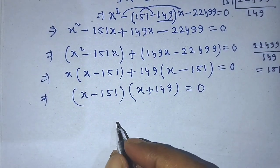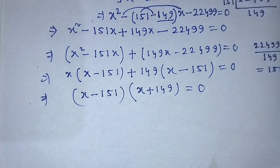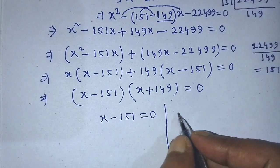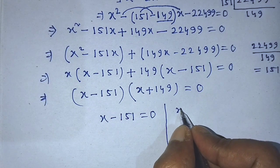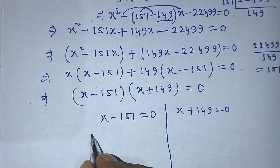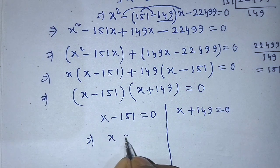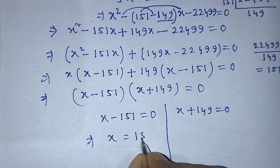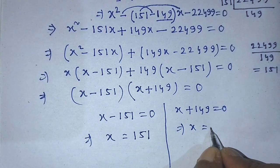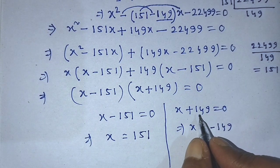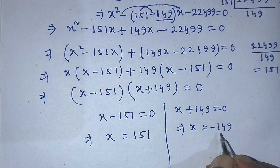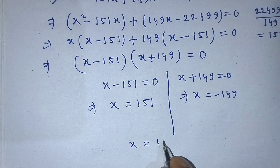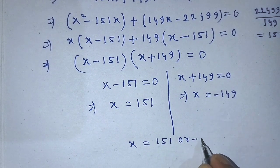Applying the zero product rule, we get two equations: x minus 151 equals 0, and x plus 149 equals 0. Transposing, the first gives x equals 151, and the second gives x equals minus 149. So this equation has two solutions: x equals 151 and x equals minus 149.